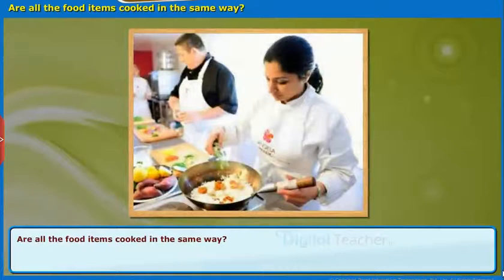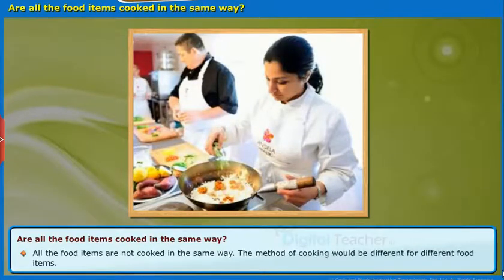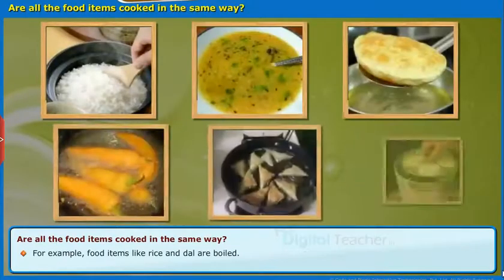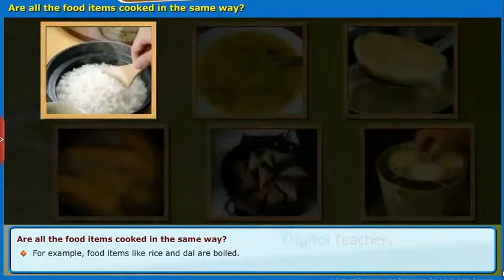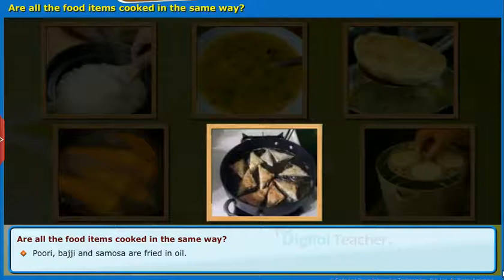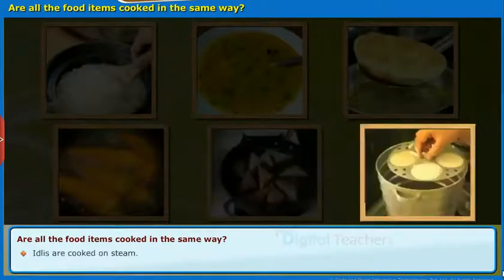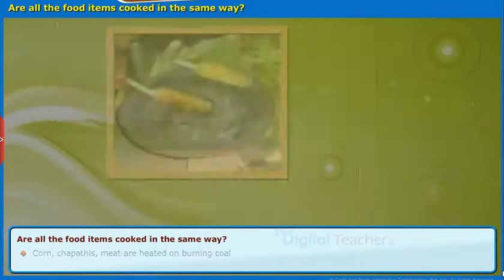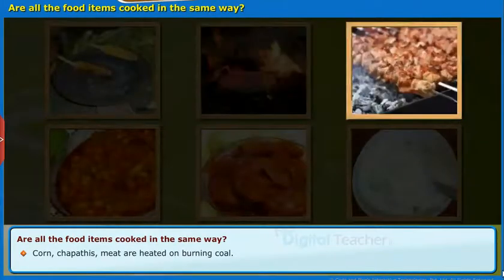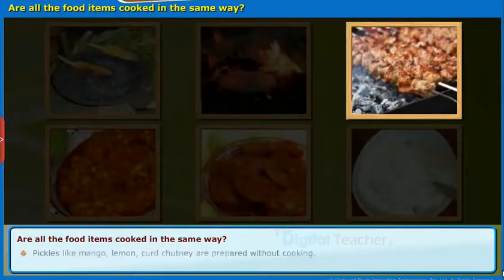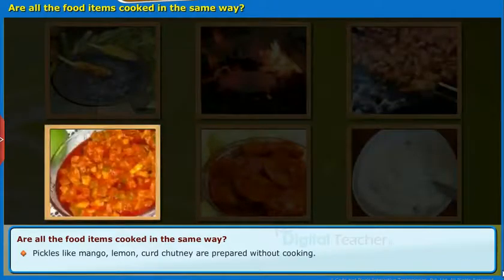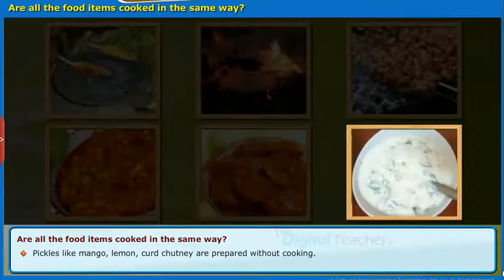Let us know whether all food items are prepared in the same way. All food items are not cooked in the same way — the method of cooking is different for different food items. For example, rice and dal are boiled; puri, bhajji, and samosa are fried in oil; idlis are cooked in steam; corn, chapatis, and meat are heated on a burning coal. Pickles like mango, lemon, curd, and chutney are prepared without cooking.